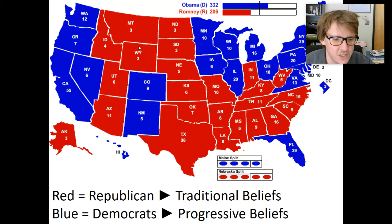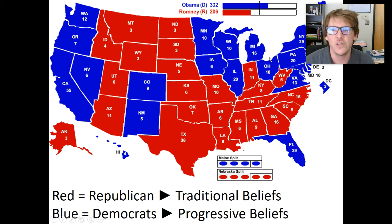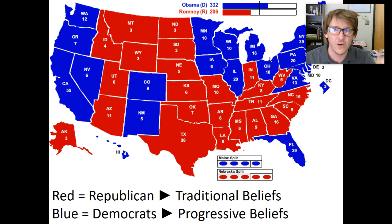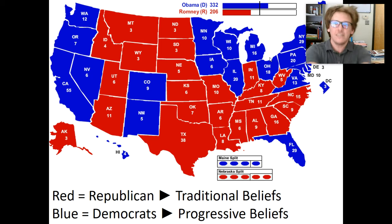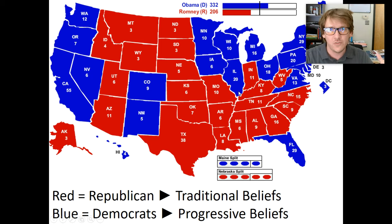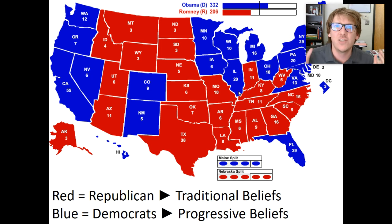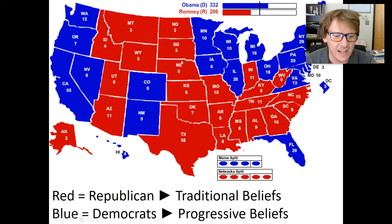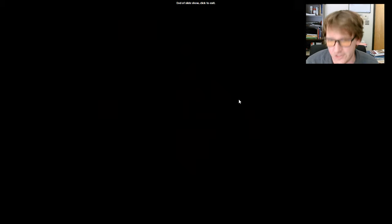And then a political map — a simple thing showing that the people in red states probably have different political views than people in blue states. But again, just a starting point showing us the difference, not giving us all the answers. The people in red states probably have different views from the blue people. Why is that? It's a starting point for investigation. But it also helps us easily and quickly communicate this information — blue states, red states, they're different. Why? We've got to do more research.